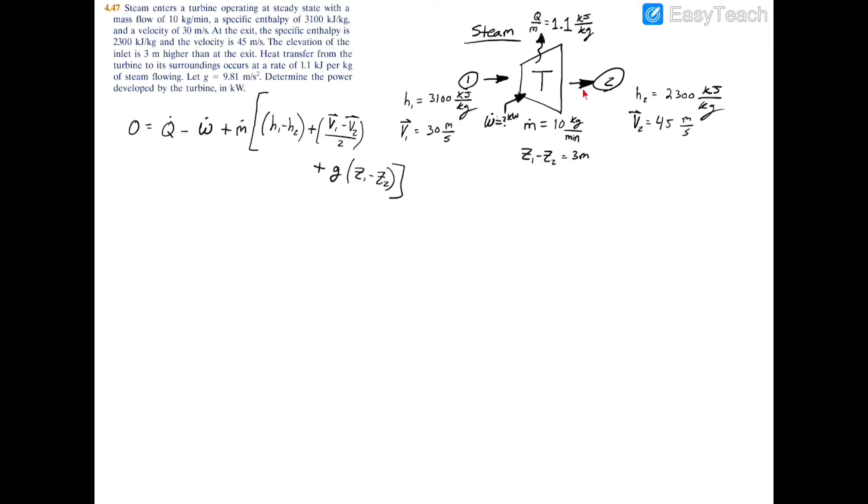Over here we have pretty much every single property that would fill out this expression except for the power, so let's rearrange this equation and solve for the power. Before we do, I think I forgot to add these squares here onto the velocity—remember it's one half mv squared for kinetic energy.